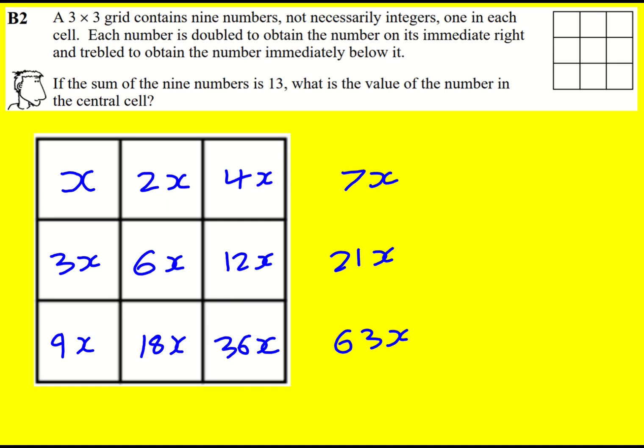This adds to 63. If I add these up then I've got 70x from the top and the bottom plus 21, 91x in total. We're told that the sum is 13 therefore x must equal 13 divided by 91.